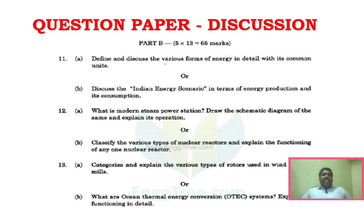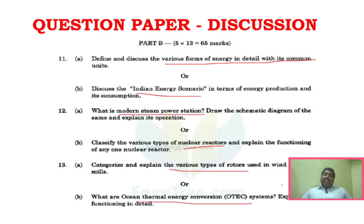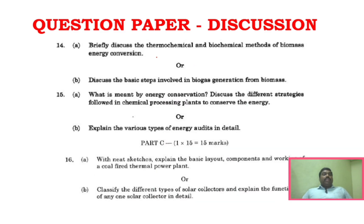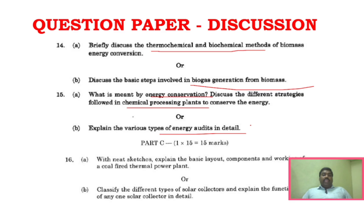For Part B: Unit 1 covers various forms of energy in detail and the Indian energy scenario. Unit 2 covers modern steam power stations and nuclear reactors. Unit 3 covers various types of wind turbine rotors and Ocean Thermal Energy Conversion — confirming one question per energy base, which is why we study all energy types. Unit 4 covers thermochemical and biochemical methods of biomass conversion, and biogas generation. Unit 5 covers energy conservation, strategies used in chemical processing plants, and various types of energy audits.